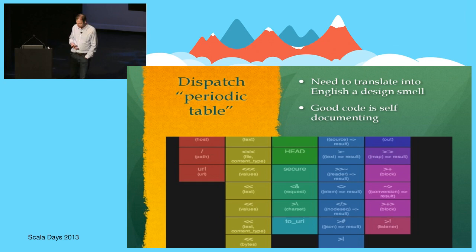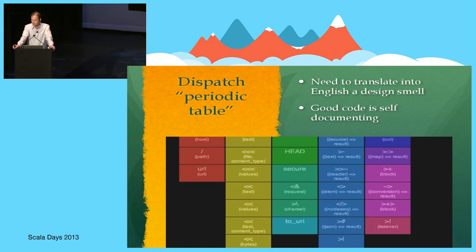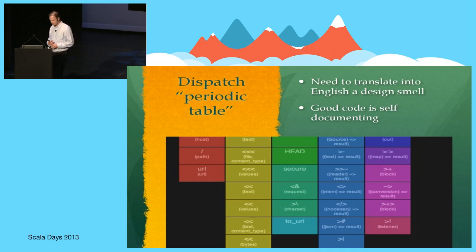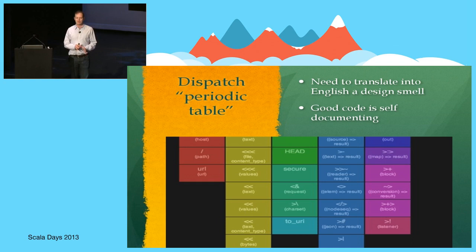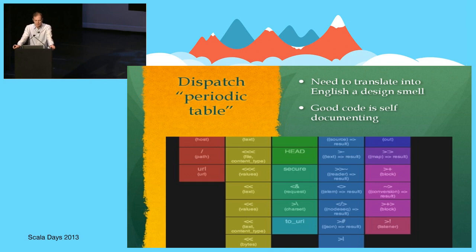A further example of my point about cleverness and obfuscation: how many people are familiar with the dispatch library? It's essentially for making web requests and sits on top of Apache Commons HTTP client. This is the so-called dispatch periodic table — the dispatch API consists largely of bizarre custom operators. Somebody very kindly produced what he called the dispatch periodic table to translate these operators into English. A language like Scala allows you to express things in English, so why would you ever need a crib sheet to translate strange symbols into English? That does not seem to be the purpose of a high-level programming language.